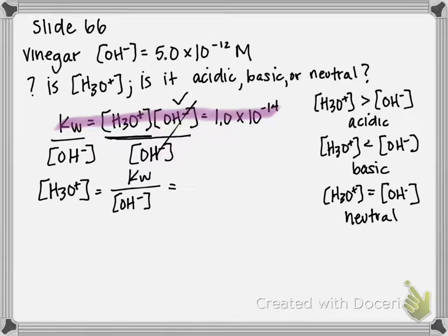Kw, which is stated up here in the problem, is 1.0×10^-14. It's always going to be that number anytime we're dealing with it. And our hydroxide concentration, as the problem tells us, is 5.0×10^-12.